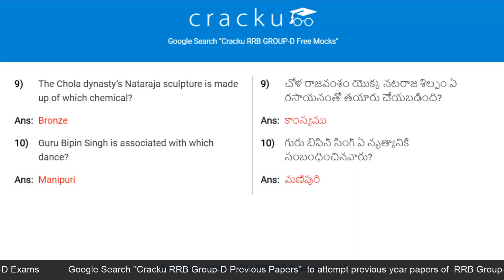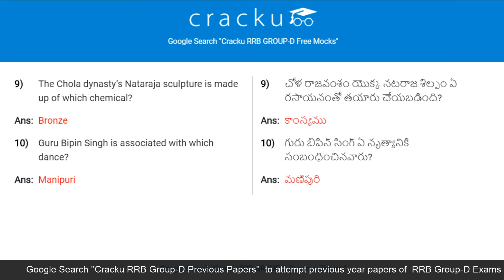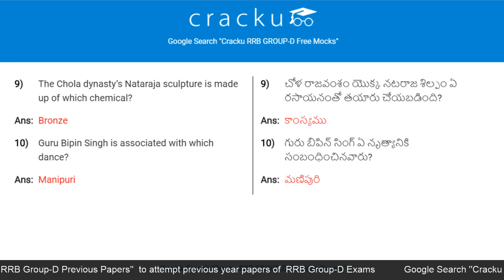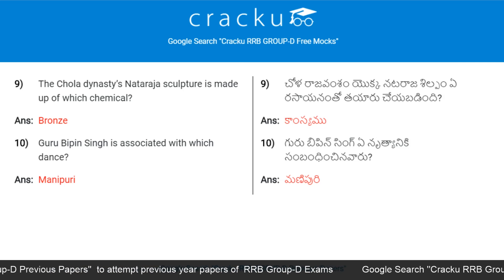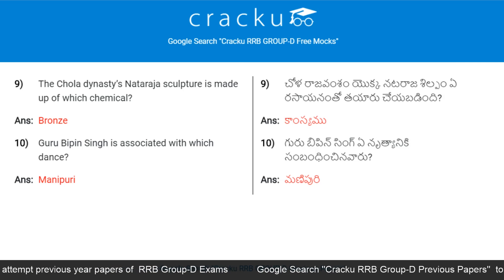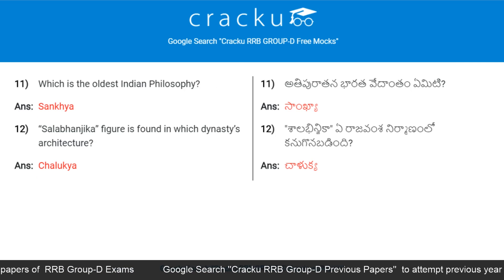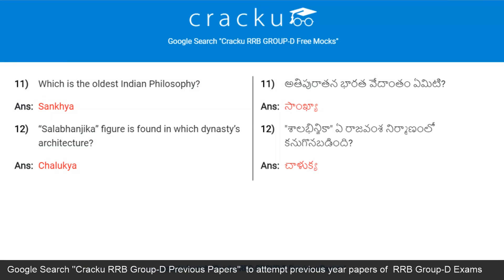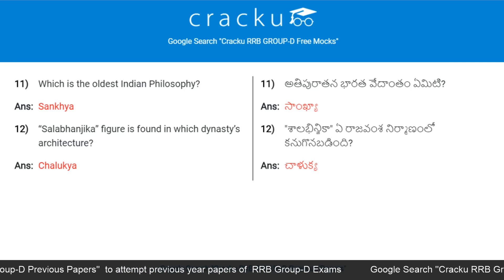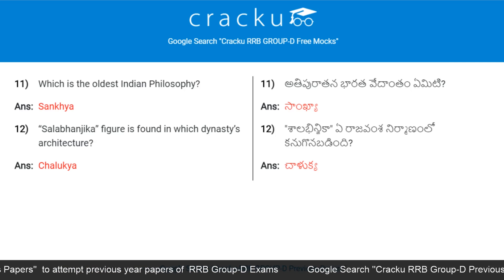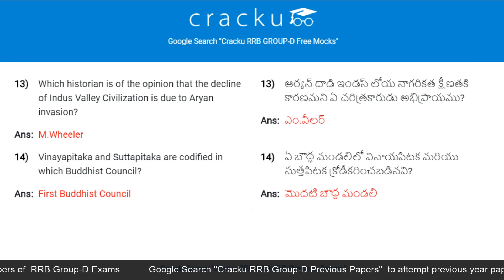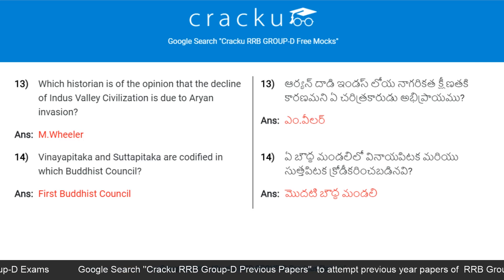The Chola dynasty's Nataraja sculpture is made up of which material? Answer: Bronze. Guru Bipin Singh is associated with which dance? Answer: Manipuri. Which is the oldest Indian philosophy? Answer: Sankhya. The Sala Banjika figure is found in which dynasty's architecture? Answer: Chalukya.